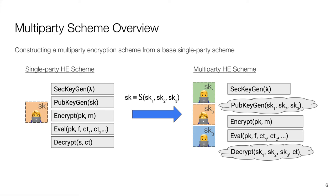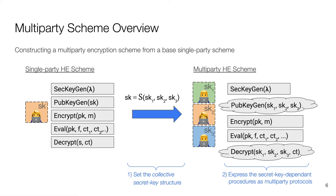Constructing a multiparty encryption scheme from a single-party scheme can be done in two steps. First, you decide on a structure for the collective secret key. Each party owns a key, and the collective secret key is a function of all the parties' keys that we will denote big S. For example, the collective secret key can be a sum of all the parties' secret keys. The chosen structure defines the data access structure, which is a set of all possible sets of parties that are able to collectively decrypt a ciphertext under S. Since the actual collective secret key must remain unknown to the parties, the function S must never be computed in practice. Hence, the second step consists in expressing the operations of the base scheme that depend on the secret key as secure multiparty protocols.